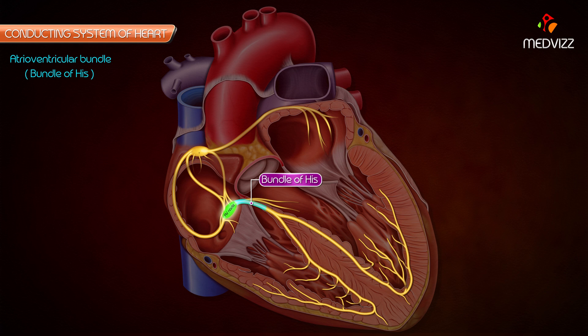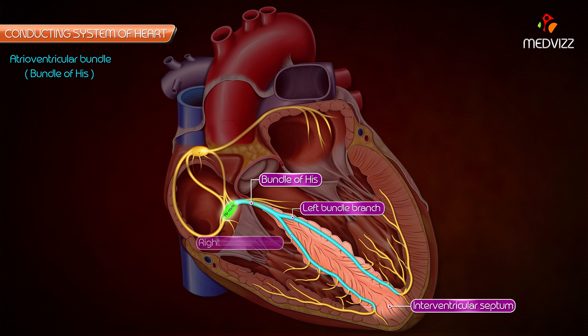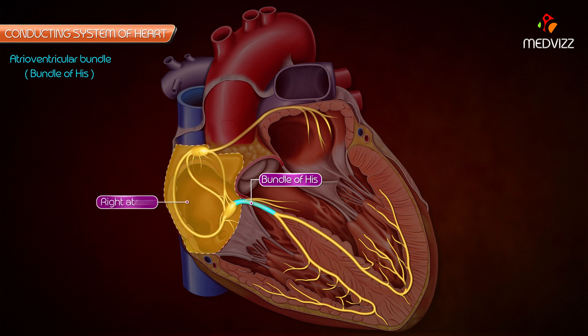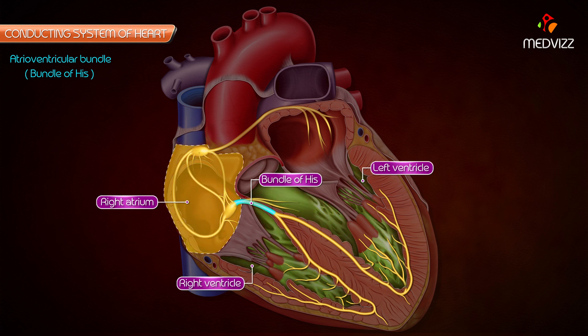The atrioventricular bundle begins from the AV node, crosses the AV ring, and runs along the inferior part of the membranous interventricular septum, where it divides into left and right branches. Since the fibrous skeleton of the heart separates the muscles of the atria from the muscles of the ventricles, the bundle of His is the only means of conducting impulses from the atria to the ventricles.